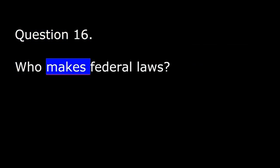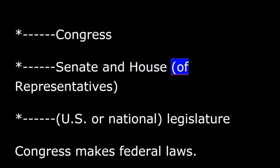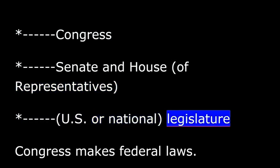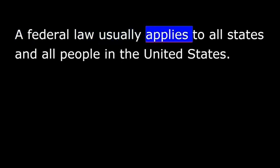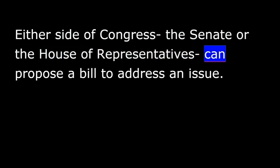Question 16. Who makes federal laws? Congress, Senate and House of Representatives, or National Legislature. Congress makes federal laws. A federal law usually applies to all states and all people in the United States. Either side of Congress, the Senate or the House of Representatives, can propose a bill to address an issue.